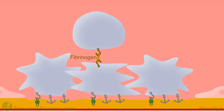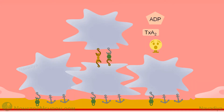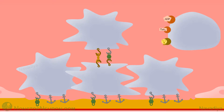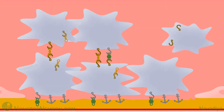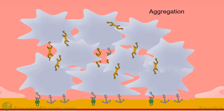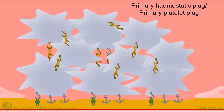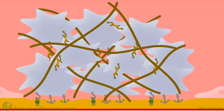Fibrinogen works as a bridge between two platelets. Similarly, von Willebrand factor also serves as a bridge to connect platelets. The activated platelet undergoes change in shape and also releases more ADP, thromboxane A2, and thrombin to recruit even more platelets. Again, the ligands bind to their respective receptors, causing platelet activation, followed by activation of glycoprotein 2b3a and binding with other activated platelets. In this way, platelets are recruited until the wound is plugged. This is called platelet aggregation. The plug thus formed is called the primary hemostatic plug or primary platelet plug. It quickly seals the break in the vasculature but is comparatively weak. Fibrin synthesized at the end of the coagulation cascade strengthens this plug, making it the secondary plug.